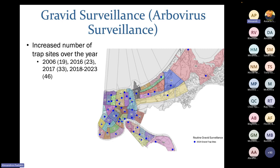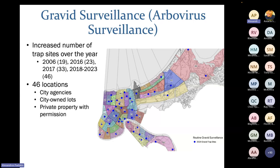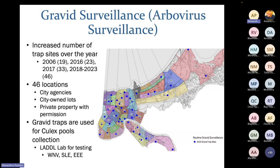We'll start with our gravid surveillance, which is our main arbovirus surveillance method. This is routine surveillance we've conducted for many years, growing from 19 locations in 2006 to now 46 different locations around the parish. On the right is a map of where these traps are, providing coverage around the whole parish. Traps are placed at city-owned lots or city agencies like fire departments and libraries, or with permission from property owners. These gravid traps are great for targeting Culex species, our primary genus responsible for locally transmitted arboviruses: West Nile virus, St. Louis encephalitis, and Eastern equine encephalitis. We run these traps weekly, pool the mosquitoes, and send them for testing for these three diseases.